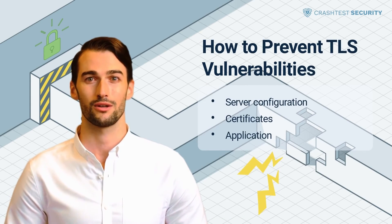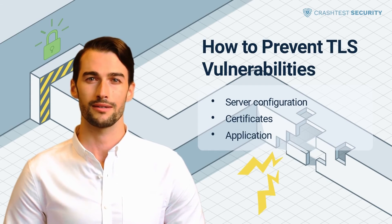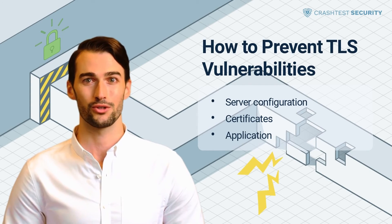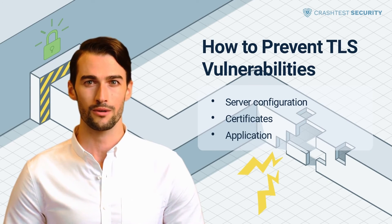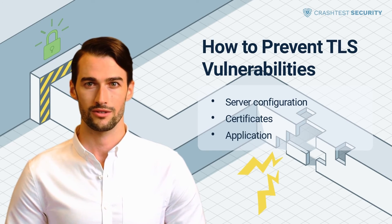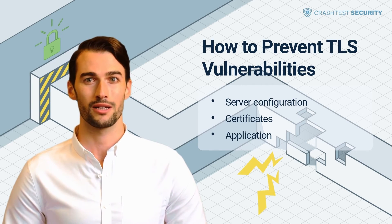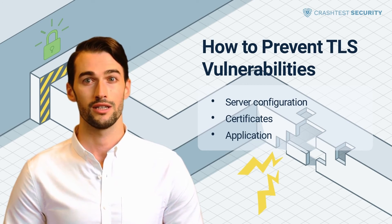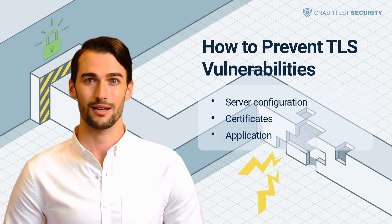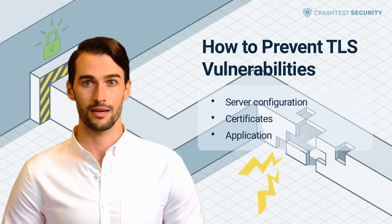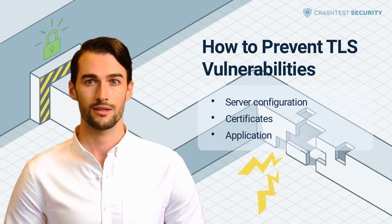The OWASP Cheat Sheet section on Transport Layer Protection offers several measures that can be taken to prevent TLS vulnerabilities. These include server configuration: only support strong protocols such as TLS 1.2 and 1.3 and disable all other protocols. Only provide support for strong ciphers and, if possible, only Galois counter-mode ciphers. Only strong DH parameters should be used if using an ephemeral Diffie-Hellman key exchange. Disable TLS compression to prevent CRIME. Keep cryptographic libraries up to date with the latest patches. Test the server configuration once it has been hardened.